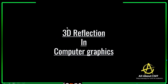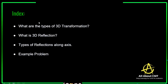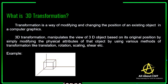Today we will see another concept in computer graphics: 3D reflection. The topics I am going to explain are the types of 3D transformation, what is 3D reflection, and types of reflection along each axis, along with one problem based on reflection. A transformation is a way of modifying and changing the position of an existing object in computer graphics.